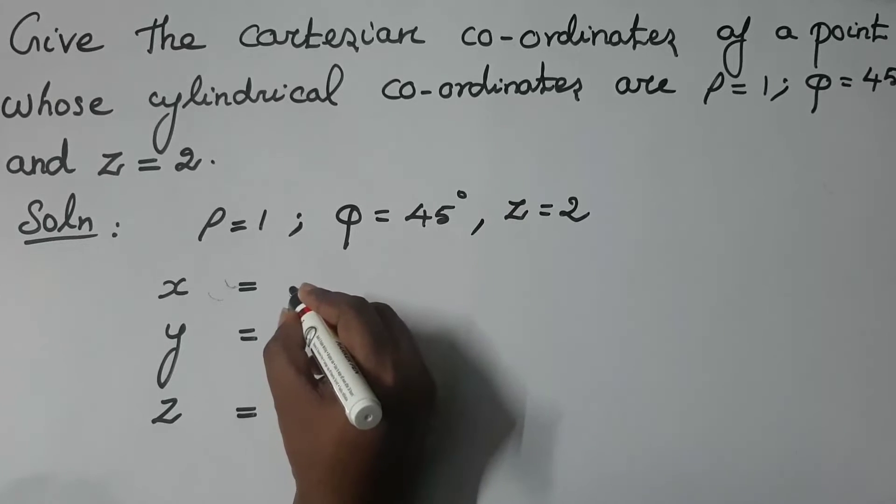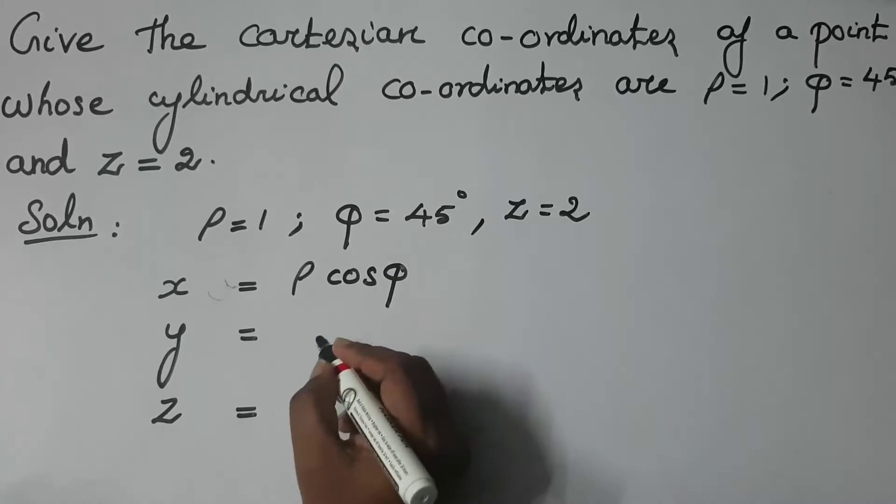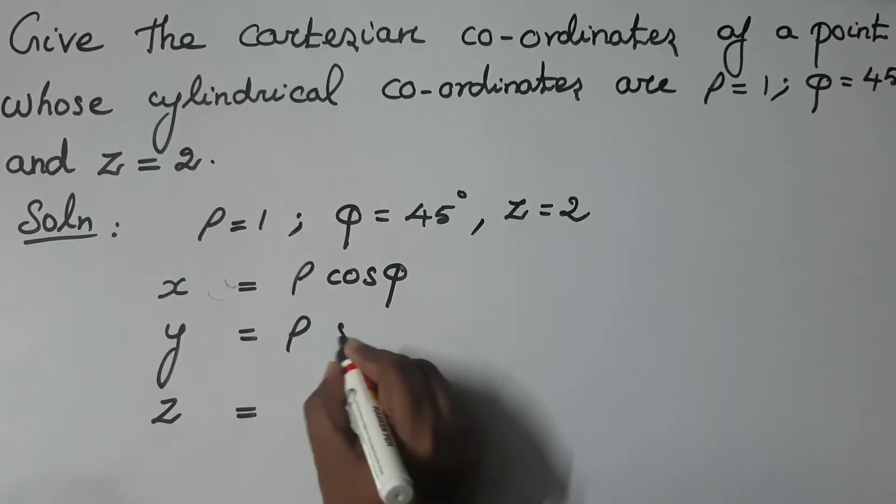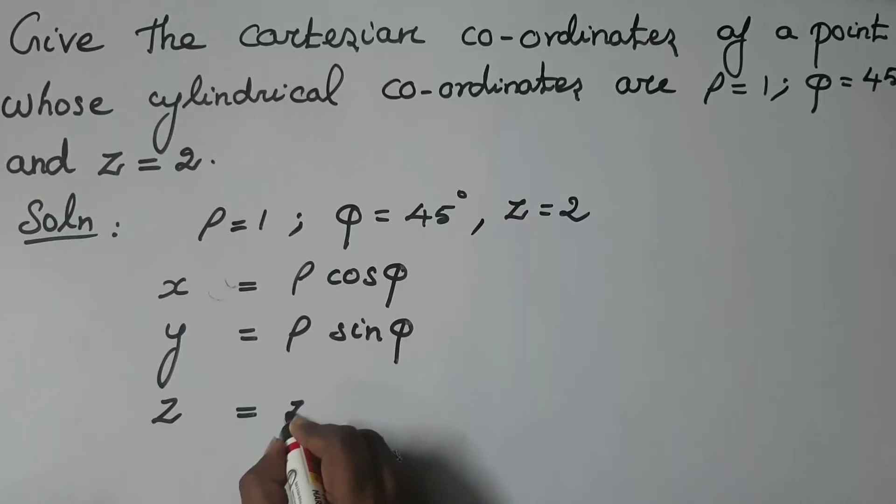So X is equal to ρ cos φ. Y is equal to ρ sin φ. Then Z is equal to z.